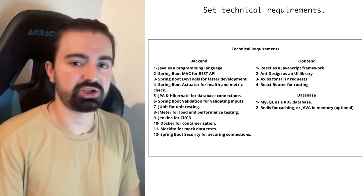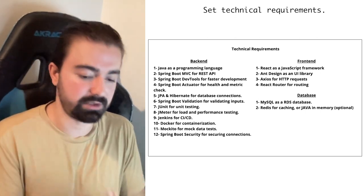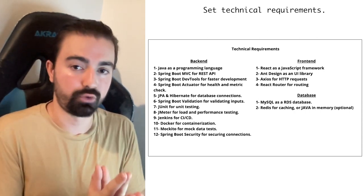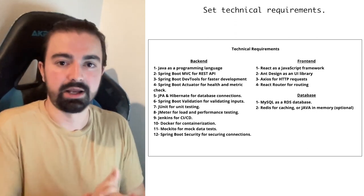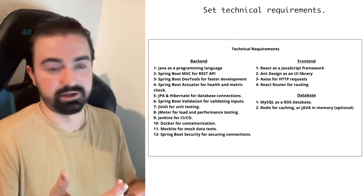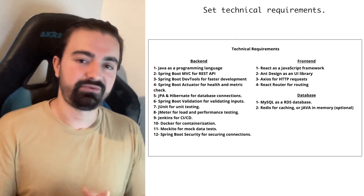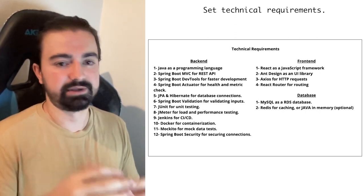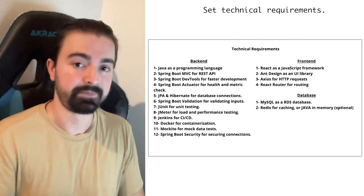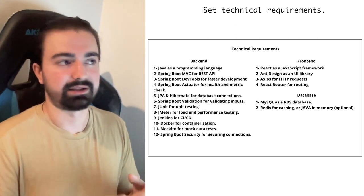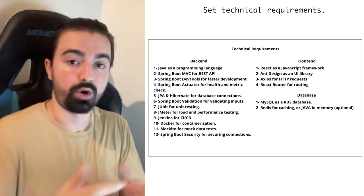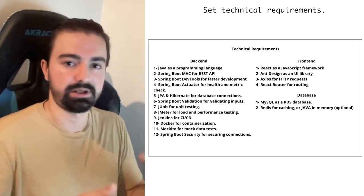The sixth part is Spring Boot Validation, which is really important for API endpoints. For example, you don't want an employee to save a book with fewer than two characters in the name — you put some validation before the saving process. The seventh part is JUnit for testing, which is one of the best testing tools for unit testing. We're going to test every method — not the whole controller or endpoints — but every method: is the saving working correctly, are the validation methods working? This is unit testing.